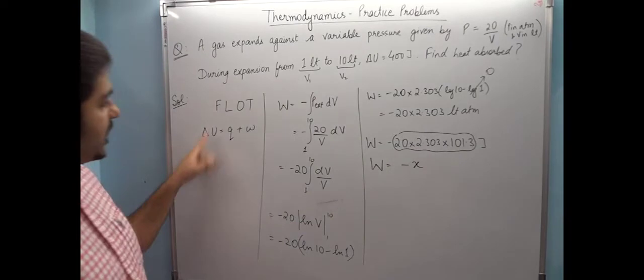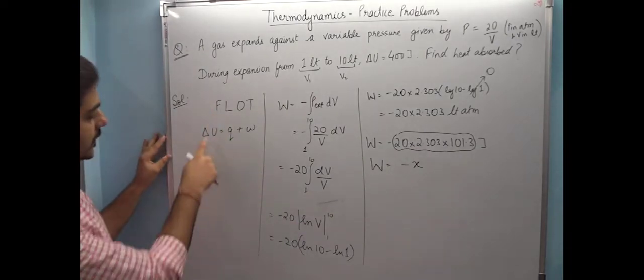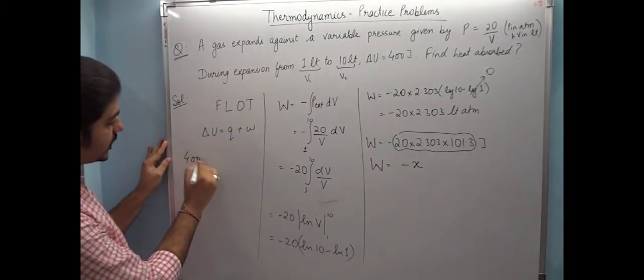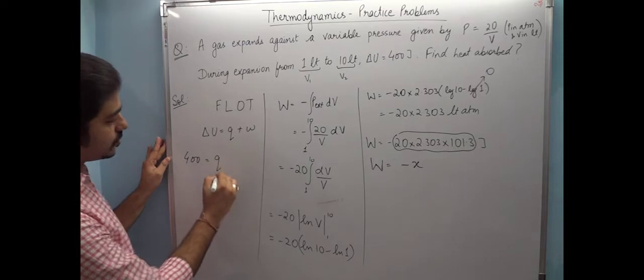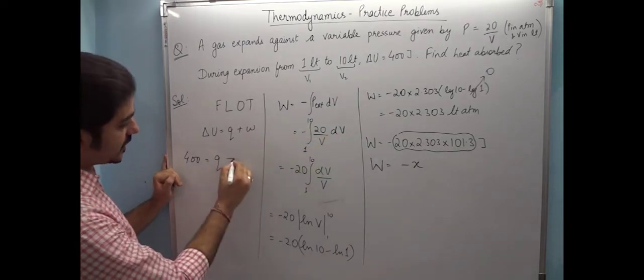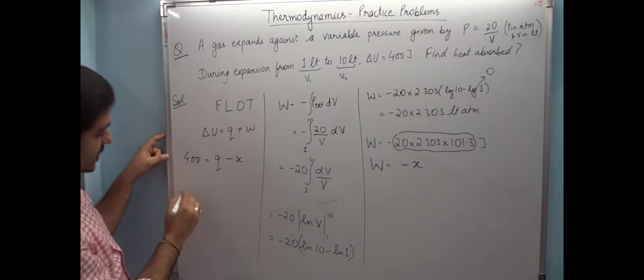So work done is found. We can easily calculate it with a calculator. Then we need to put values in the first law. Delta U value was 400, Q is what we need to find, and work done value is minus X. When X moves to the right side, the value will come.